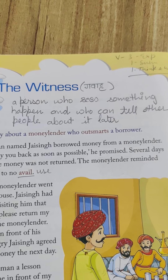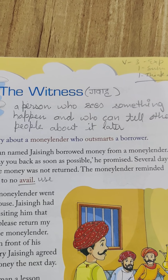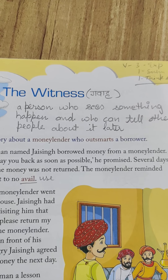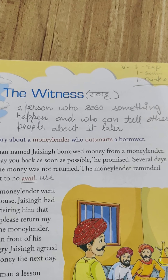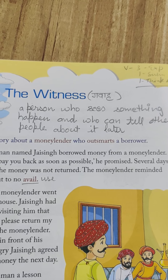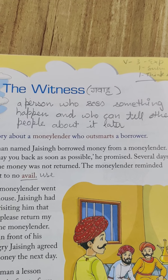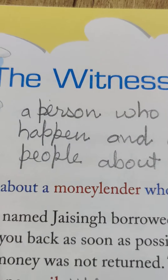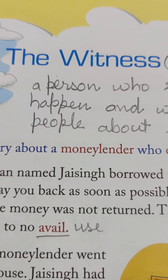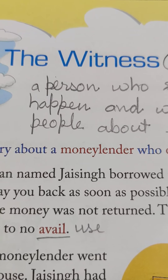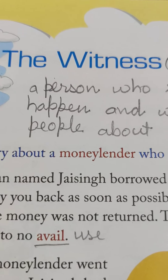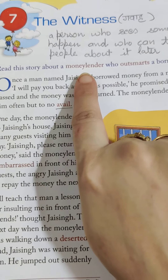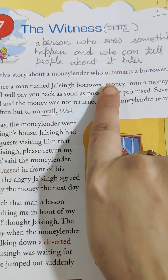You can write down this definition in your books so that you could remember. In simple words, suppose some incident is taking place and at that time some person is there and he has seen it happen in front of his eyes — so he would be called a witness. The title of the chapter is 'The Witness,' so we are sure that there is going to be something important. Let us start.